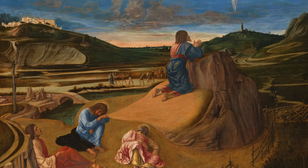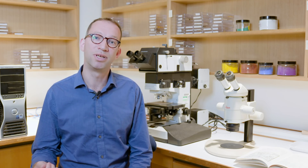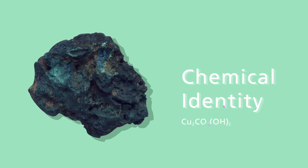In the landscape and — perhaps surprisingly — in the discarded cloak of St James, Bellini has used malachite. While painters would have known that the pigment was a green coloured copper mineral, they would not have known its precise chemical identity.